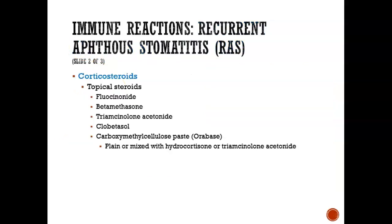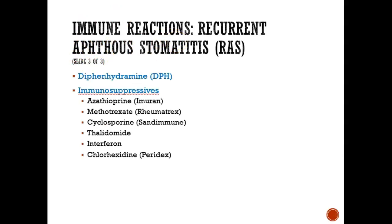When someone gets a canker sore, there are corticosteroids that we give them to treat it. There are a list of different types of steroids that could be given to help treat those canker sores or aphthous stomatitis. Some people even call it aphthous ulcers. So again, we see lots of different medications that are used to treat canker sores.